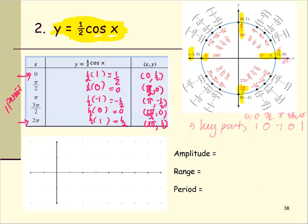We draw the graph a little wider, marking zero and breaking the interval from zero to two pi into four equal sub-intervals with increments of pi over two: pi over two, pi, three pi over two, and two pi.